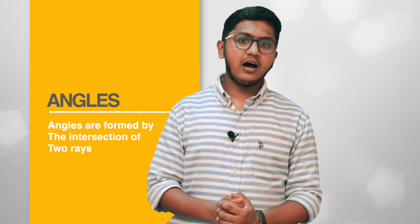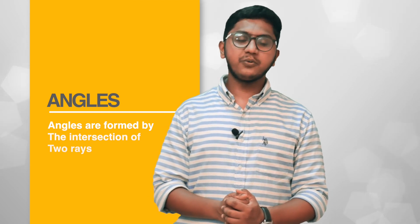Hello everyone. Today we will discuss something about angles. Do you know what is meant by angles? What is the definition of angle? Angles are formed by the intersection of two rays. This is a ray. This is another ray. These two rays are intersecting at a point. This point is called the vertex of the angle, and this corner is called the angle.